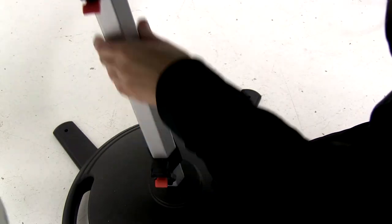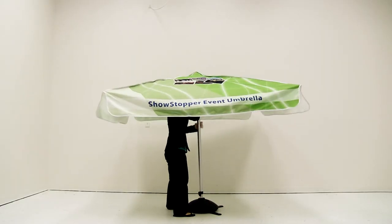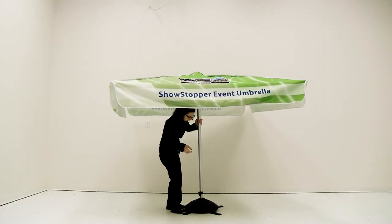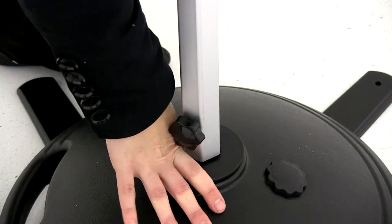Open the canopy by raising the height adjustment connector until it clicks into place. To raise the canopy's height, push up the height adjustment connector until it clicks into place.